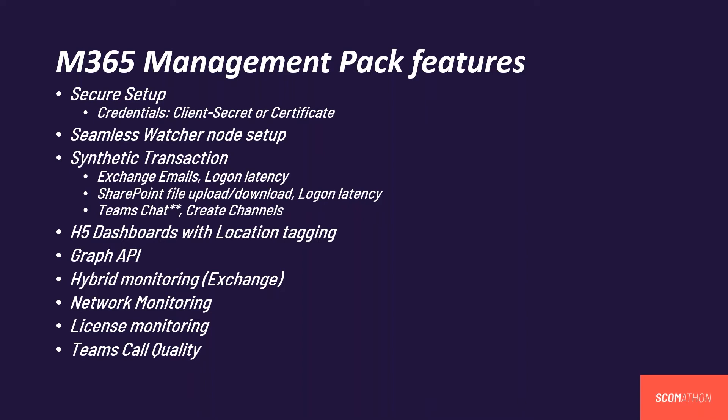All operations performed in this management pack will use the Graph API — we'll talk about what permissions are required. We also want SCOM to help understand performance metrics for a hybrid environment: mainly on the Exchange side — how long does it take for an email sent from on-premises to reach an online user's mailbox, and vice versa. We want to monitor the health of Exchange Hybrid. Lastly, network monitoring and license monitoring are included, along with Teams call quality: jitter, packet loss ratio, and packet reordering percentage, all presented on dashboards.